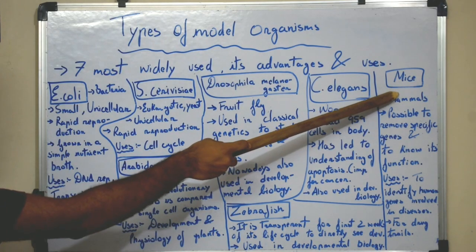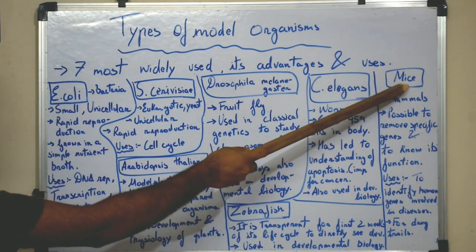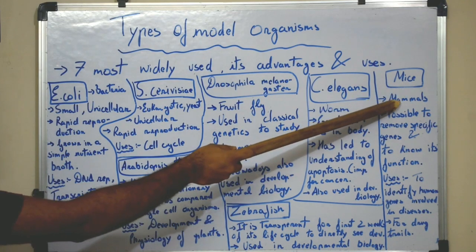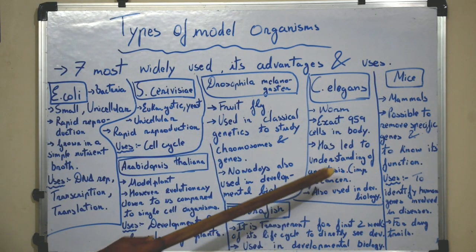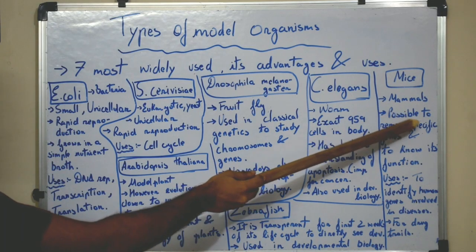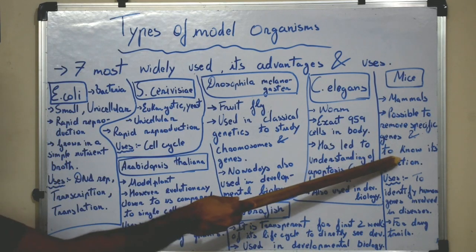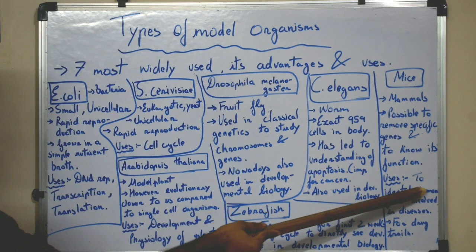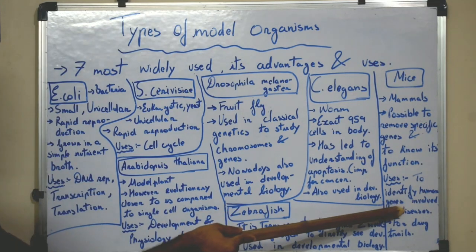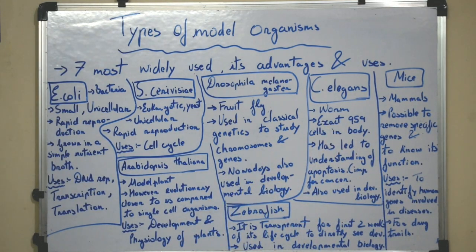The last model organism, which is most widely and extensively used, is mice. Mice are mammals, so they are very close to humans. It is possible to remove specific genes from mice, and after removal of specific genes we can determine their function. So mice are used to identify human genes involved in diseases and also for drug trials.